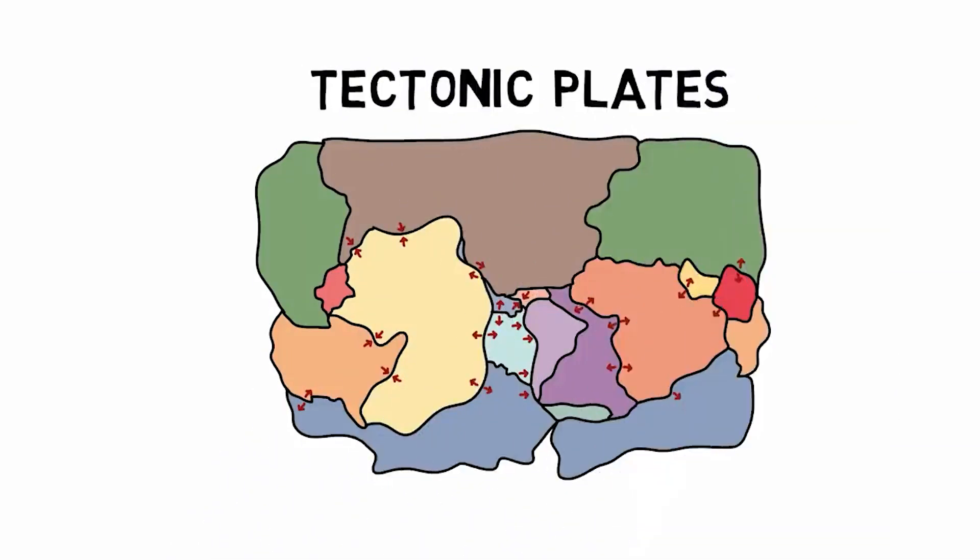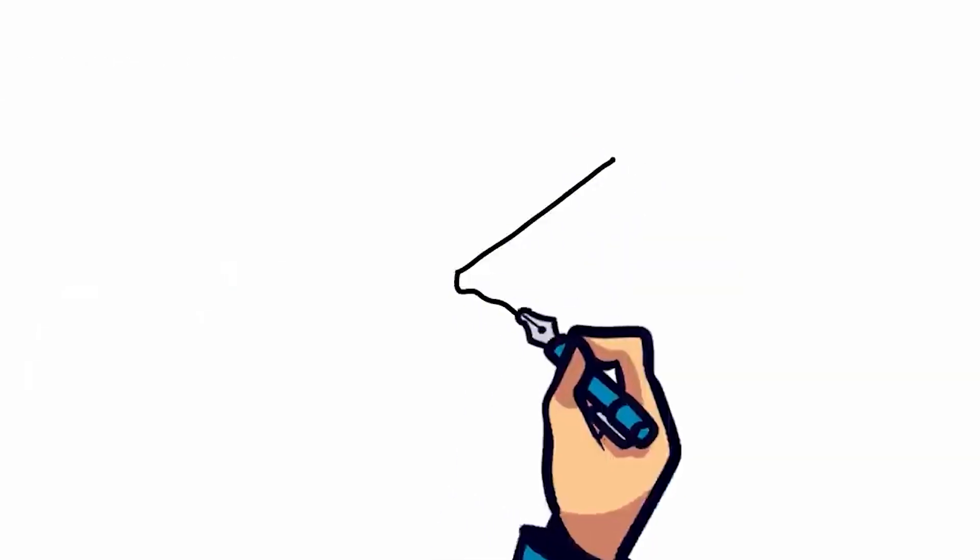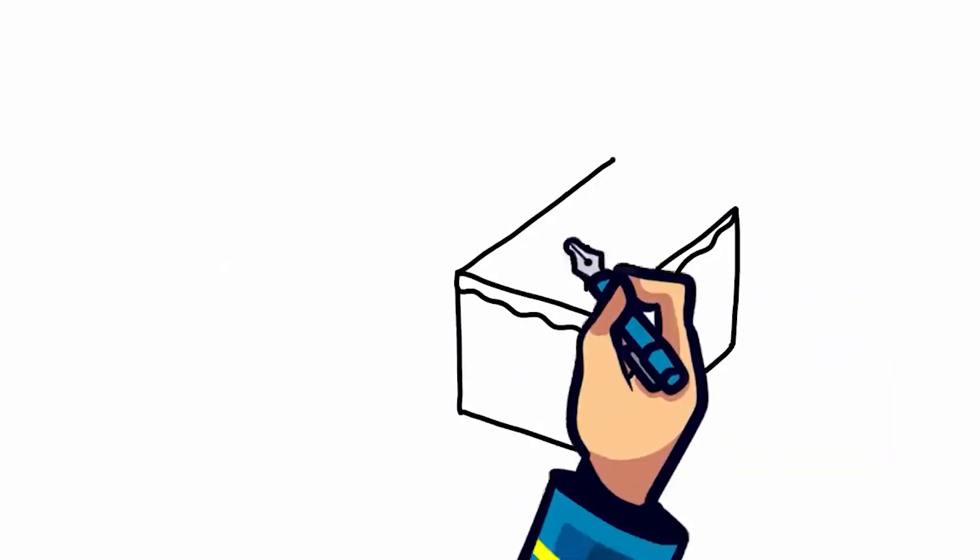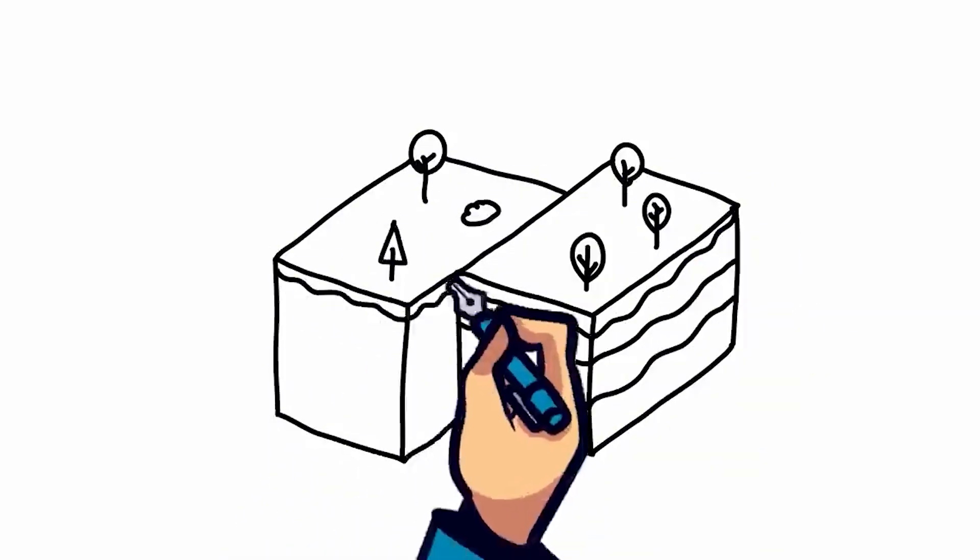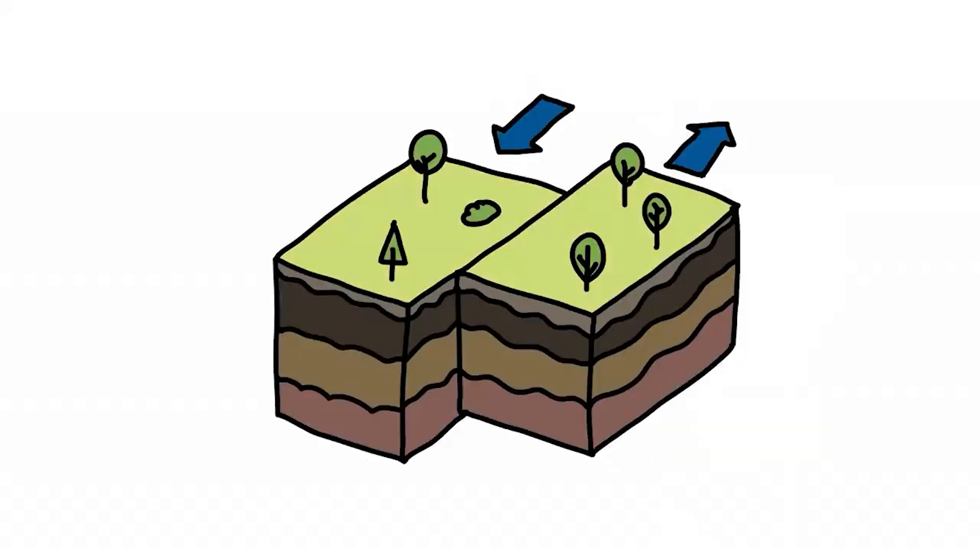Although we can't feel it, these plates are continuously moving. When the edges of the tectonic plates collide, they may stick and cause friction. As the rough edges stick together, the rest of the plate continues to move, storing up energy and causing stress.